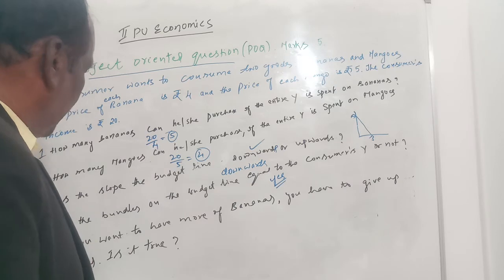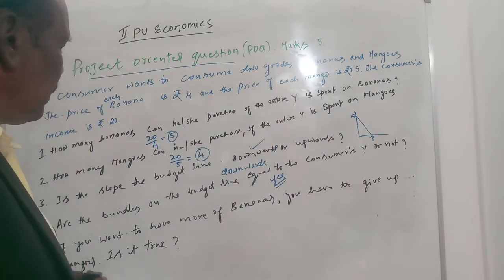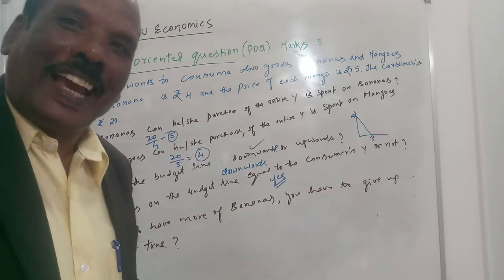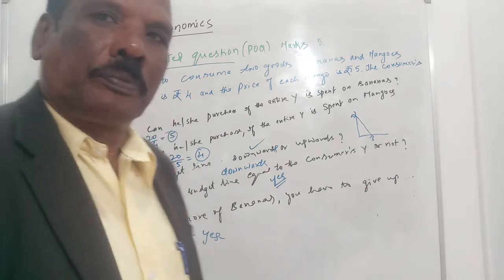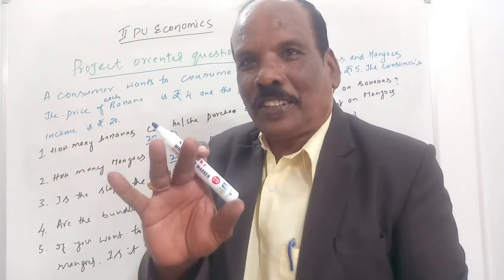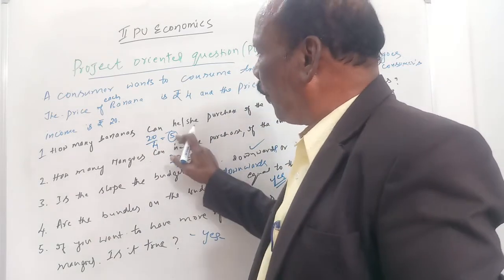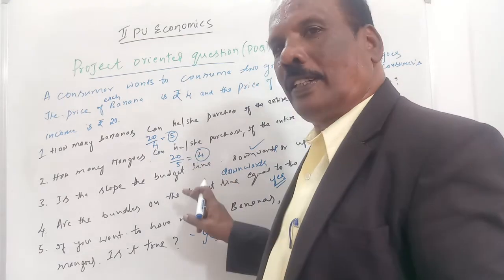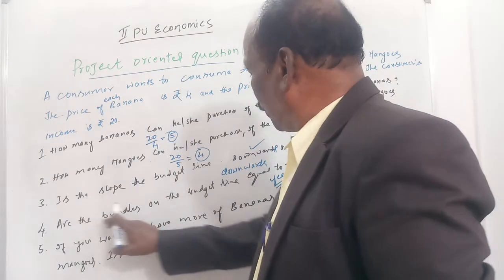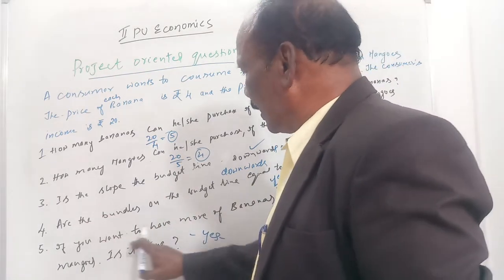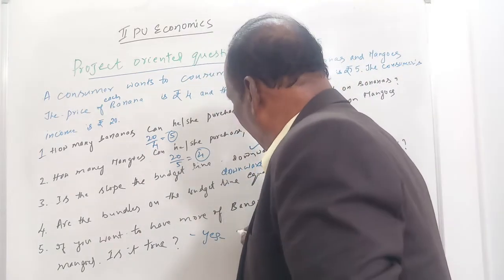For the fifth question: if you want to have more of bananas, you have to give up mangoes. Is it true? Yes, it is true. If you write 'yes' or 'true', no problem. So the answers are: question 1 — five, question 2 — four, question 3 — downwards, question 4 — yes, question 5 — yes, it is true.